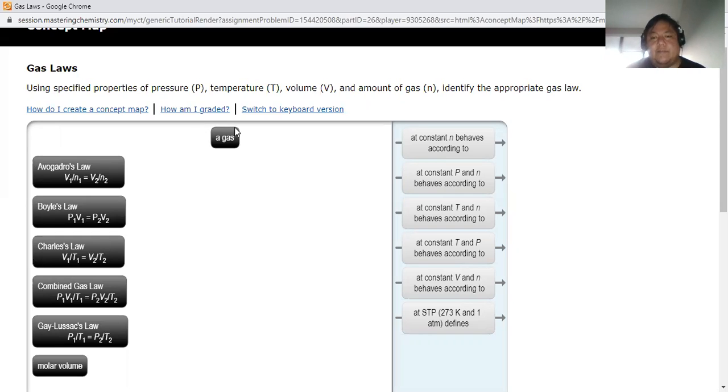So we have constant n behaves according to, constant P and n, at constant T and n... The easiest way to think about it is if we look at our things on the left - we'll save molar volume for the end - but if you think of the ones on the left, we have all of these different laws.